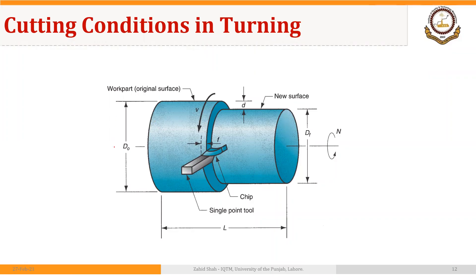For example, if you have a blank with an original diameter D subscript O, and we have to turn this blank to get a final diameter D subscript F using a depth of cut d, then the final diameter equals the original diameter minus 2 times the depth of cut.